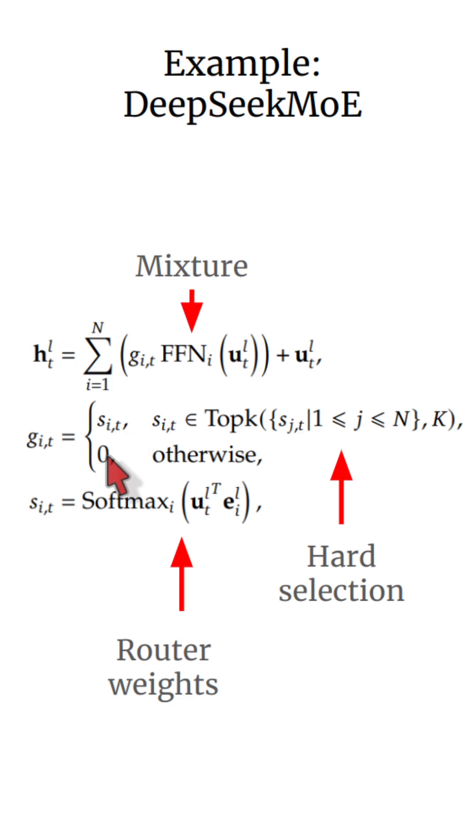Otherwise, it's set to zero. This gives us a hard decision of which experts are actually used. And in our computation of the output values, we simply take a weighted sum of these experts and skip the other ones. By doing this, we avoid many of the actual FFN calculations for the zero-valued experts.